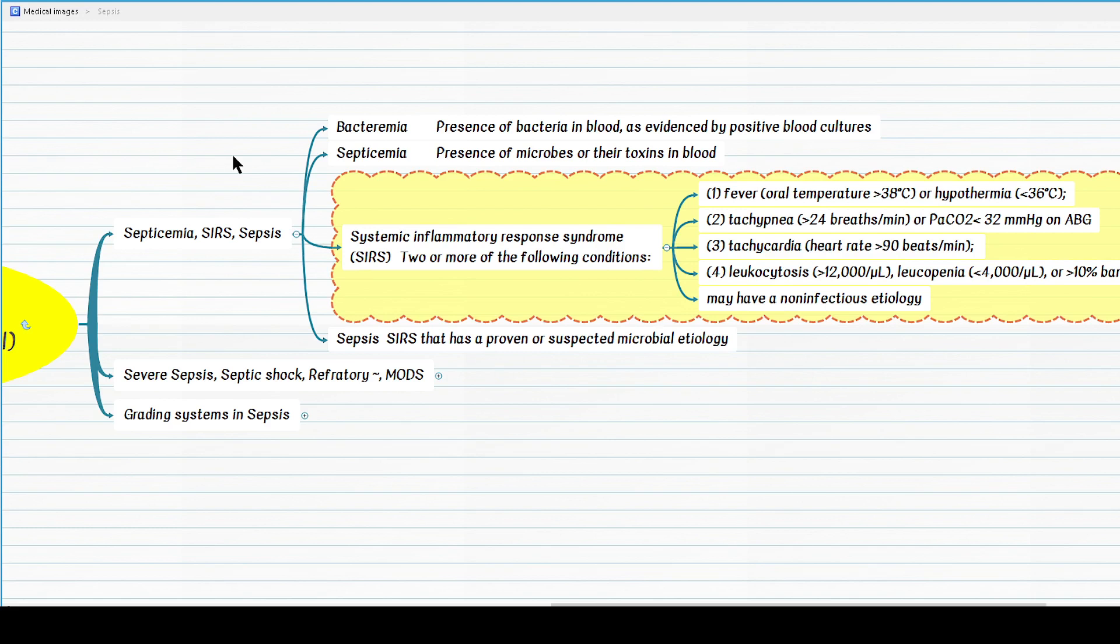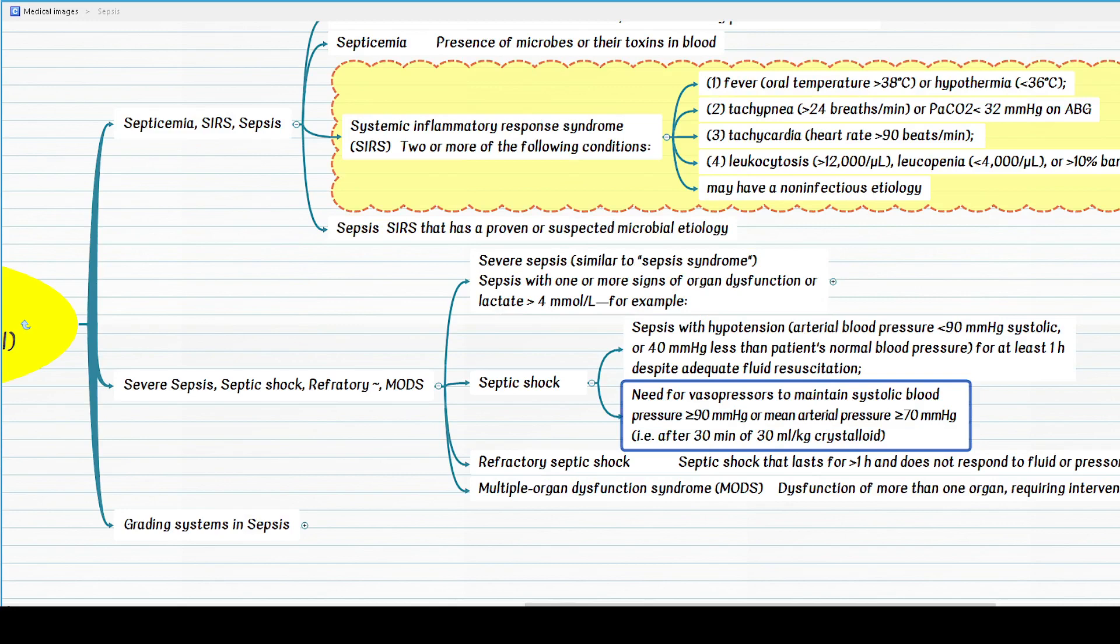Let's move on to the next tier differential, which is severe sepsis, septic shock, refractory septic shock, and multi-organ dysfunction syndrome. What's the simple definition of severe sepsis? It is a condition inclusive of sepsis plus one or more sign or symptoms related to sepsis-induced organ dysfunction. Alternative diagnosis of severe sepsis is a patient with sepsis who has a lactate greater than 4 mmol per liter.